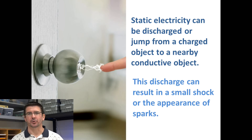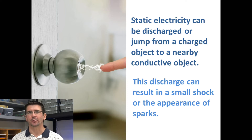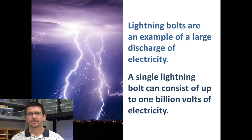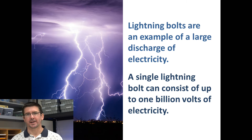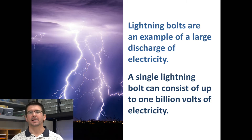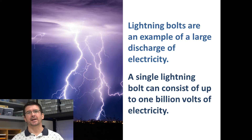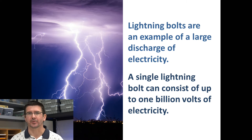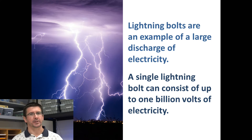Sometimes when static electricity is discharged, you may even notice a little spark — it's not anything to be worried about. It's just that electrical charge, those electrons being discharged from your body, flowing into a conductive material or another person. On a larger scale, lightning is another form of static electricity — a lot more electric charge being built up and released. A lightning bolt can have up to 1 billion volts of electricity, which is why lightning can be so dangerous. That's why we never want to be outside in a lightning storm, because that's far more electricity than our bodies can handle.